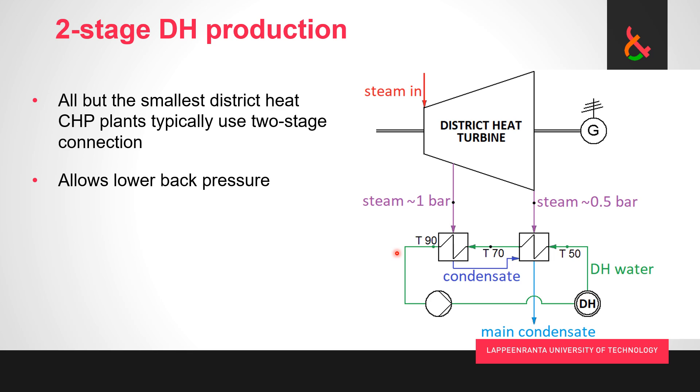Basically it allows us to have lower back pressure. If we had single stage, if we wanted to produce 90 degrees district heating water, it would mean that our expansion would stop here at one bar. We would have no option of expanding any further. Now we let half of the steam expand further to preheat the district heating water halfway up.